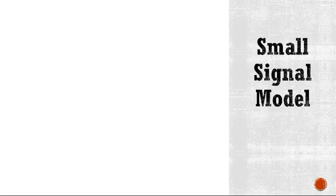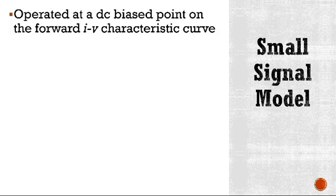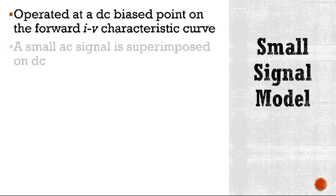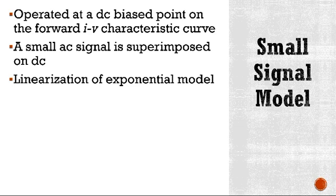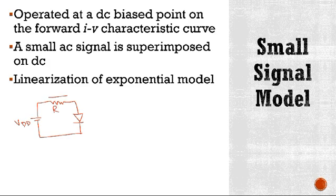The small signal diode model is operated at a DC biased point on the forward current-voltage characteristic curve. In this model, a small AC signal is superimposed on DC. This model is a linearization of the exponential model. Here is a simple diode circuit where VDD is the supply, current ID flows through the circuit, and this is the diode.